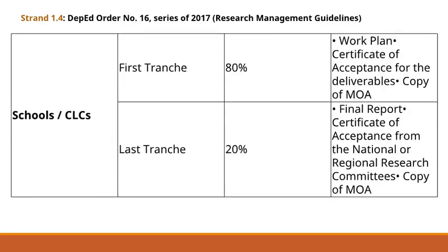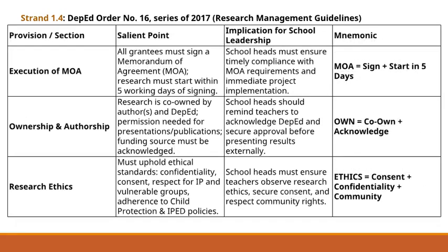For schools and community learning centers, BERF funds are released in just two tranches. The first tranche, 80%, is provided upon submission of the Work Plan, Certificate of Acceptance, and signed MOA. The last tranche, 20%, is released only after the final report is submitted and accepted by the division or regional research committees. For school heads, this means careful planning and close monitoring of deliverables to ensure the bulk of funds are properly utilized and the final tranche is secured.